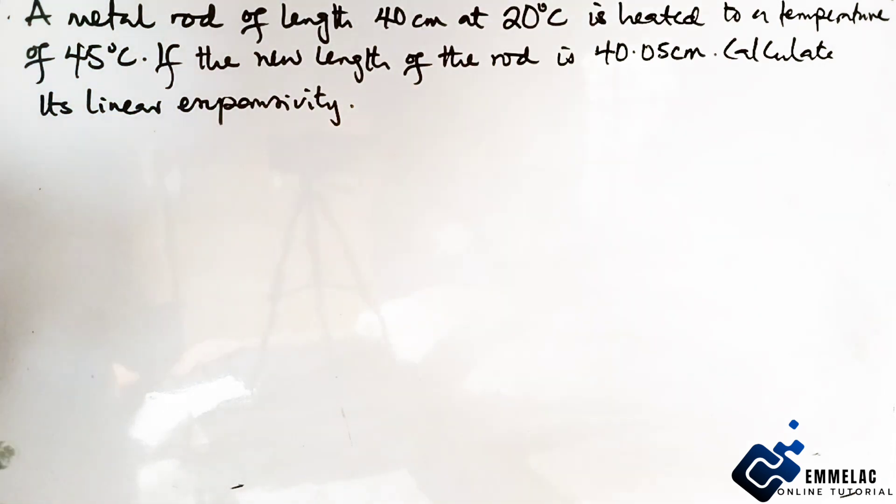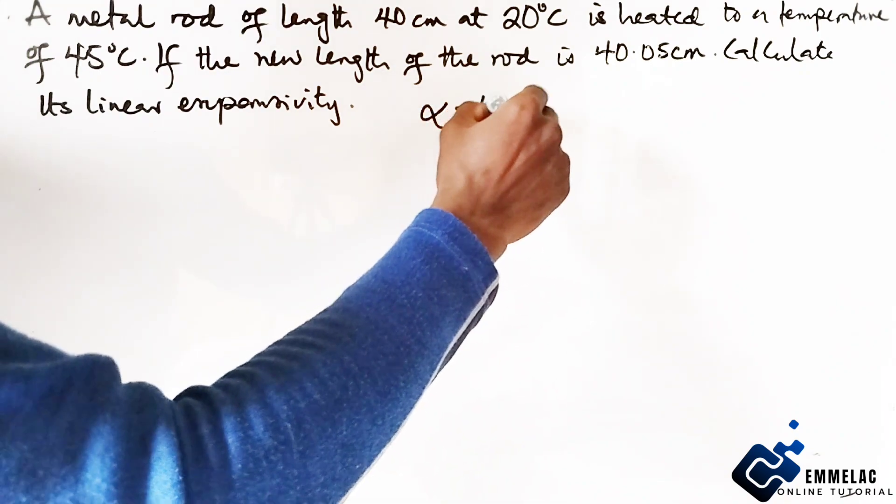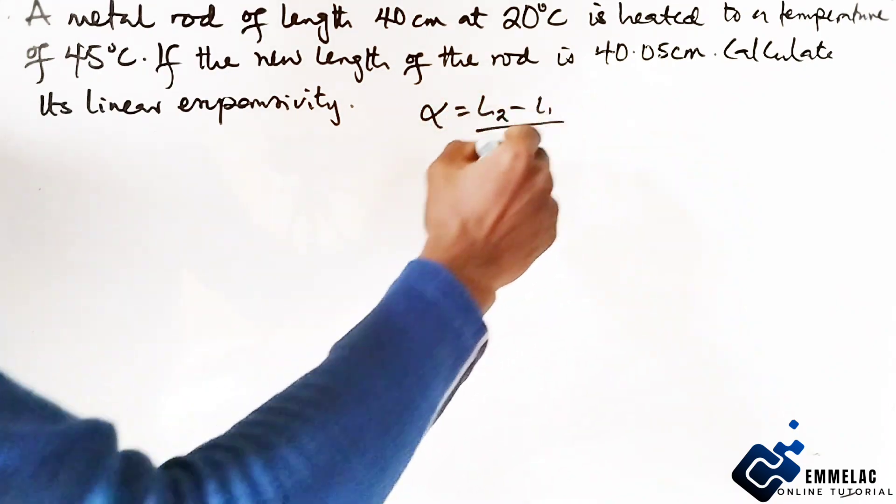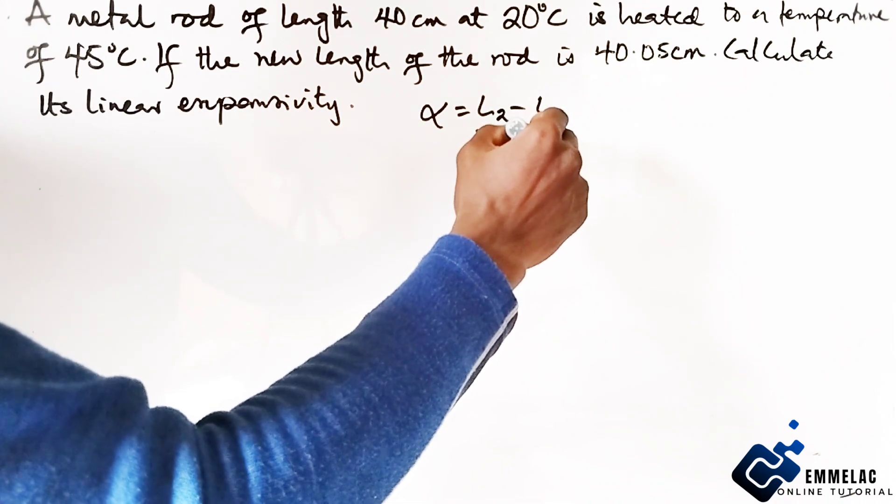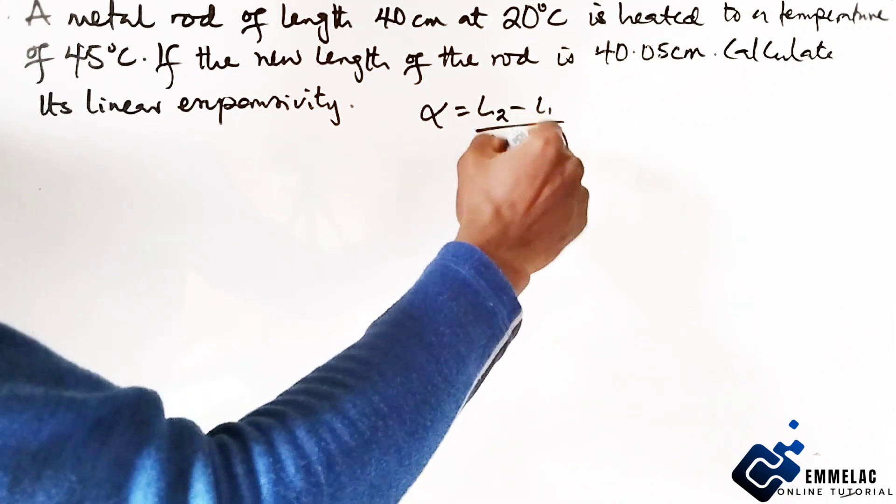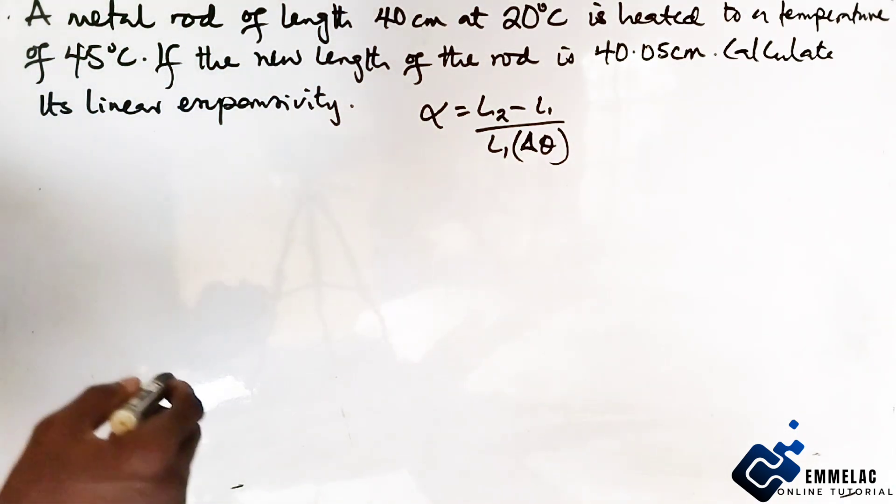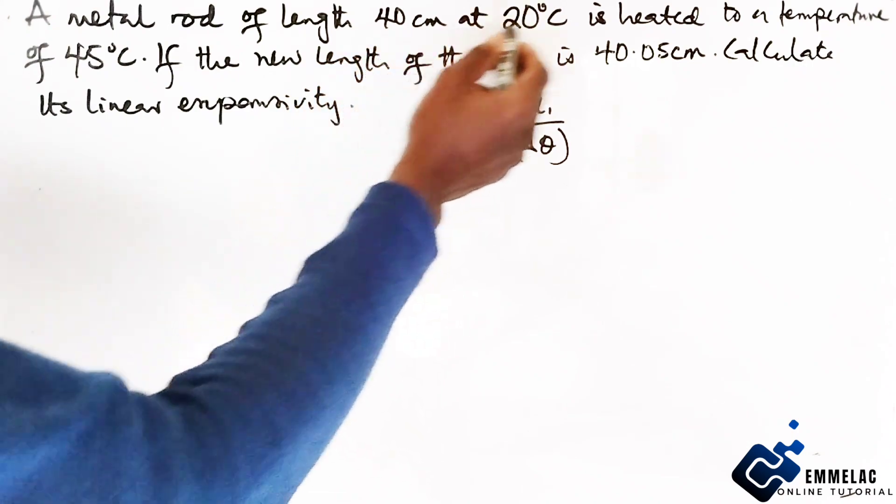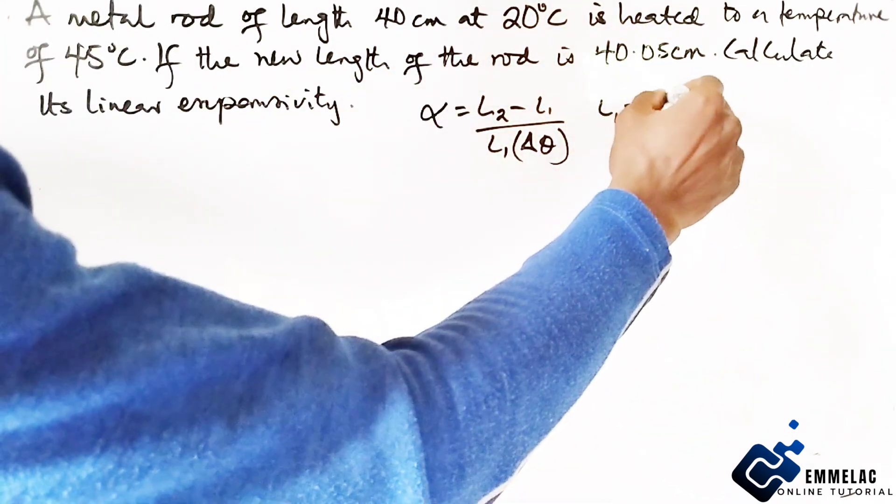Let's move further. So here, we know that the linear expansivity is giving us the increase in length by the initial length times change in temperature or the increase in temperature. And here the length, our initial length here is 40 cm.